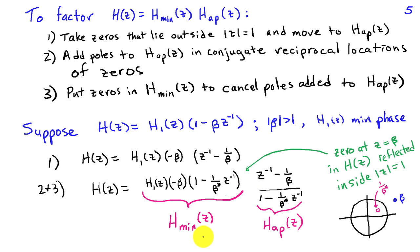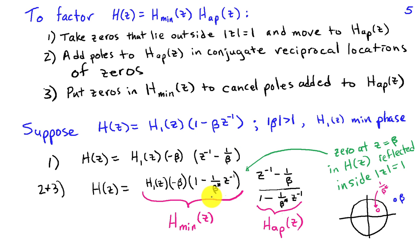The first part is H_min(z), indicated in magenta, and the second term is in the form of an all-pass filter. In effect, starting with H(z), we've taken the zero at z = β and obtained a minimum phase system by reflecting that zero back inside the unit circle. Since the all-pass component has unit magnitude response at all frequencies, moving a zero from outside to inside the unit circle as a conjugate reciprocal does not change the magnitude response — so the magnitude response of H_min is the same as that of H. The phase response is different because the all-pass system contributes extra phase beyond the minimum phase of H_min.